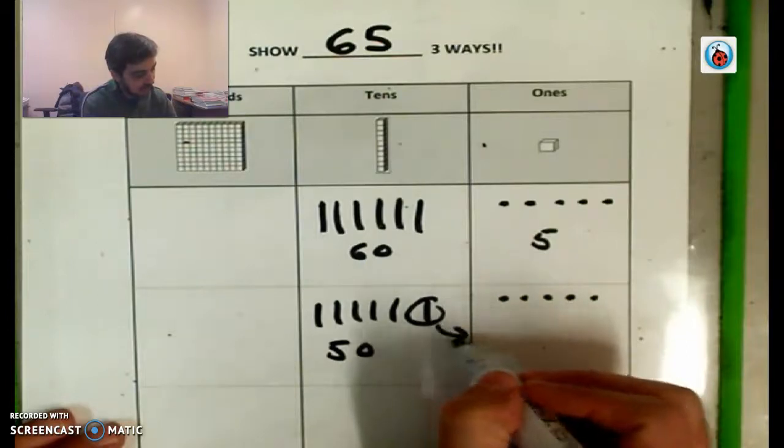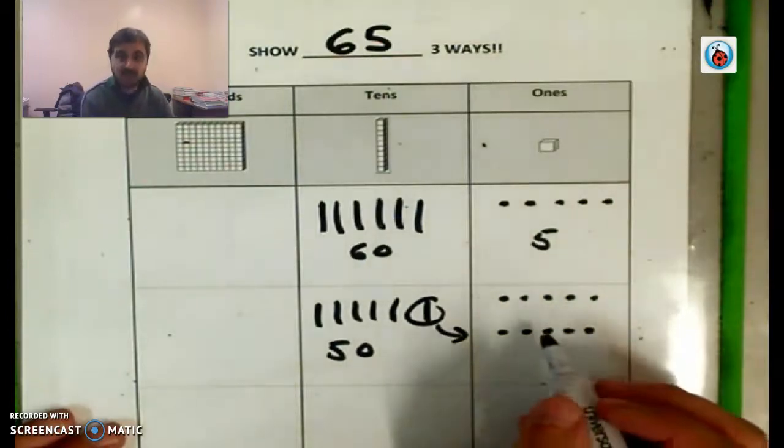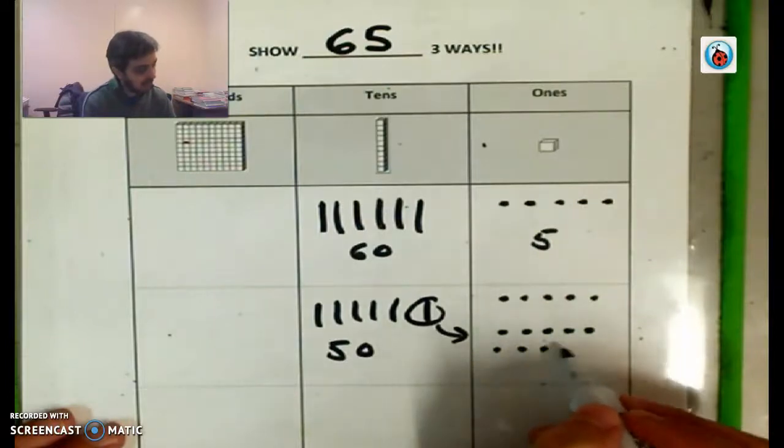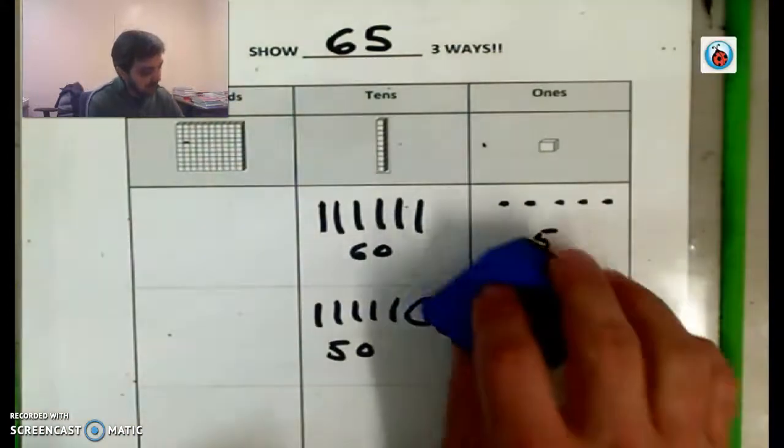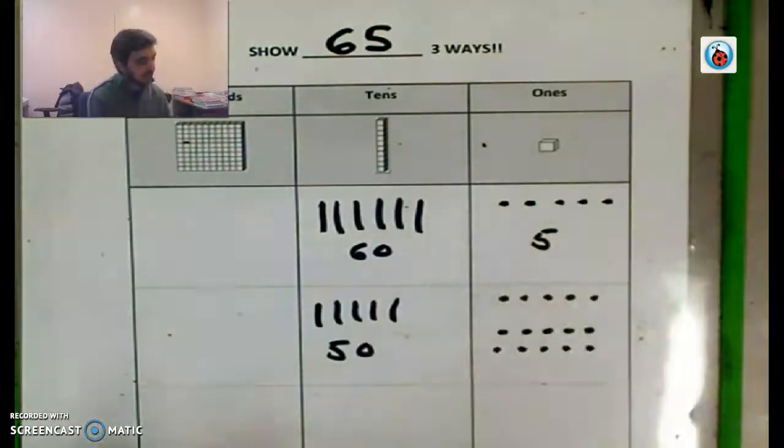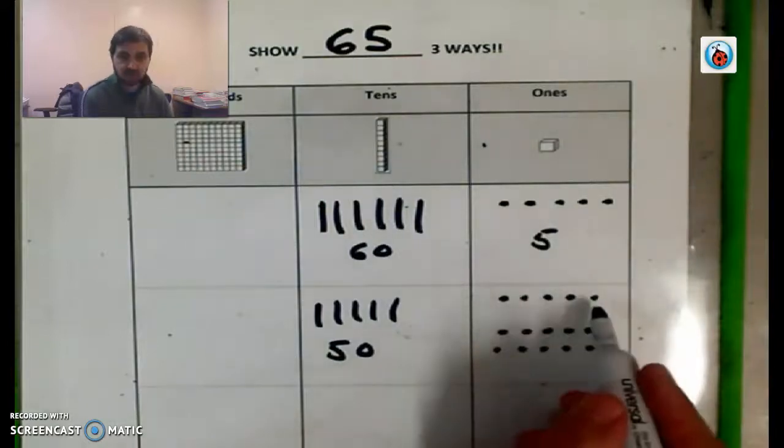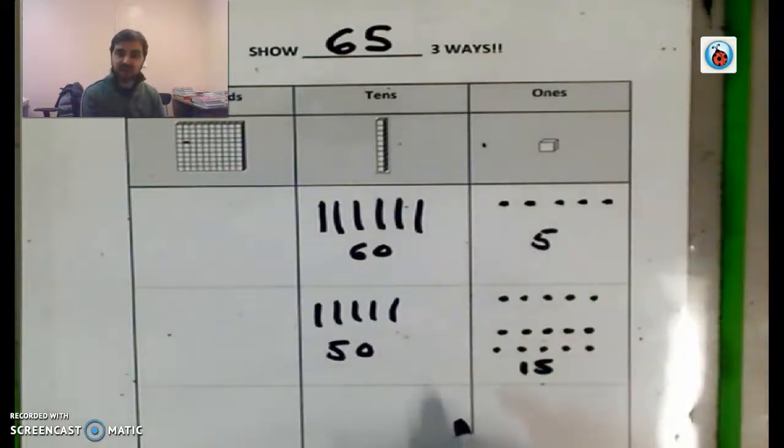And over here, we'd still have our five that we started with. But if we poured out that bag that was here, and then we're going to dump it out over here. One, two, three, four, five. So we're adding 10, six, seven, eight, nine, 10. So we just poured out that bag over here. And now we have, instead of just five Skittles over here, we have 15. So we still have 65, right? 65, 60 and five is the same as 50 and 15.